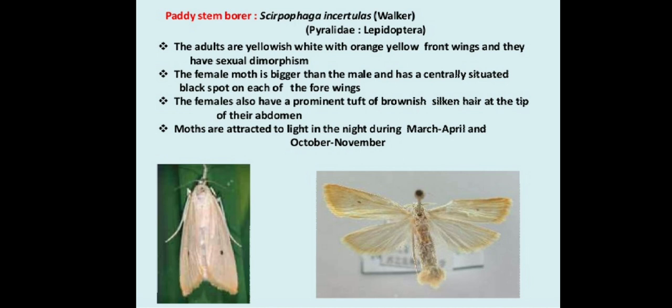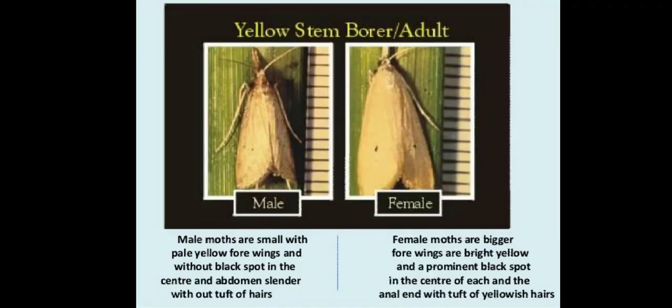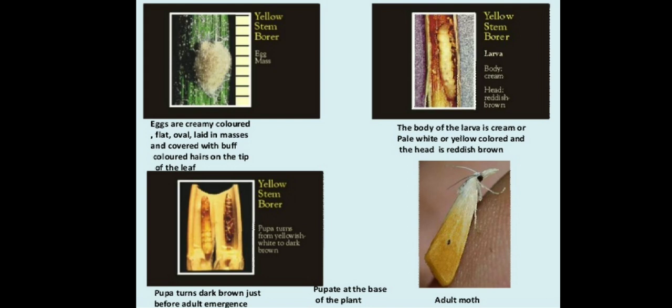The females also have a prominent tuft of brownish silken hair at the tip of the abdomen. Moths are attracted towards light at night during March, April and October, November. The male moth is smaller than the female. The egg stage shows creamy white colored, flat, oval eggs laid in masses and covered with a tuft of hairs on the tip of the leaf. The larval body is green or pale white or yellow colored with a reddish brown head. Pupation takes place inside the stem itself; the pupa turns dark brown just before adult emergence and pupates at the base of the plant.